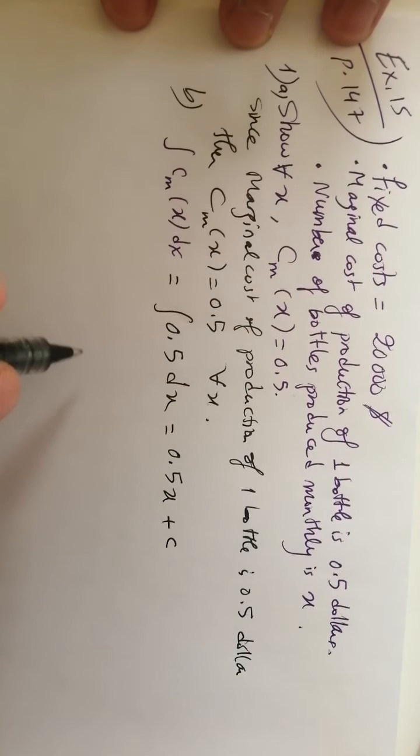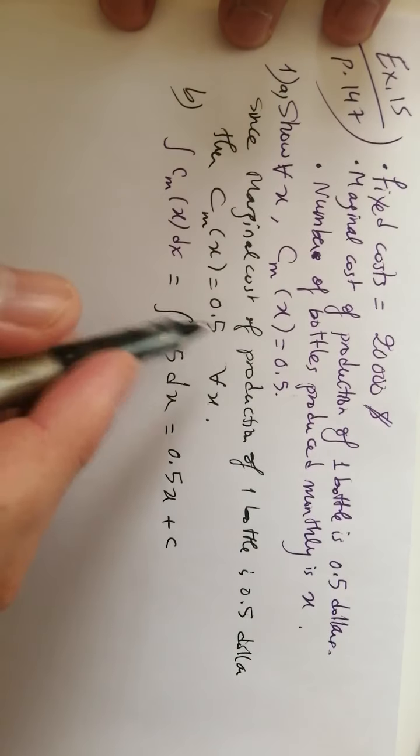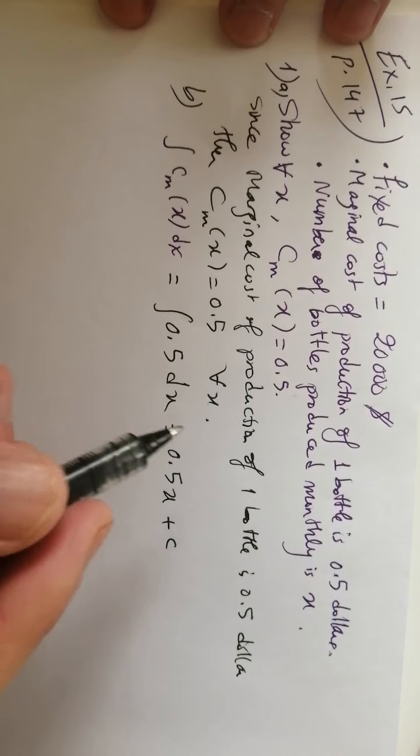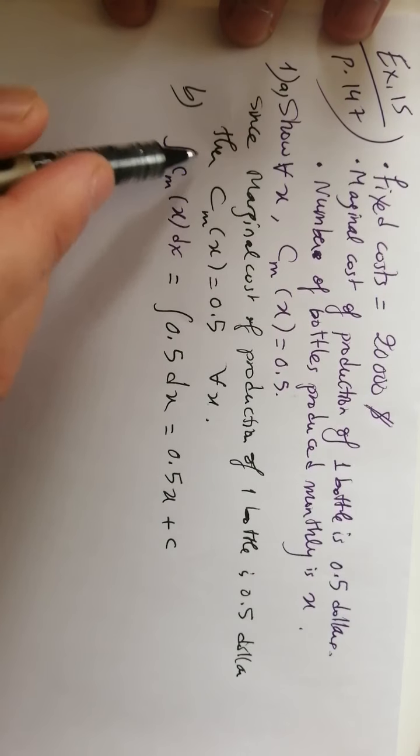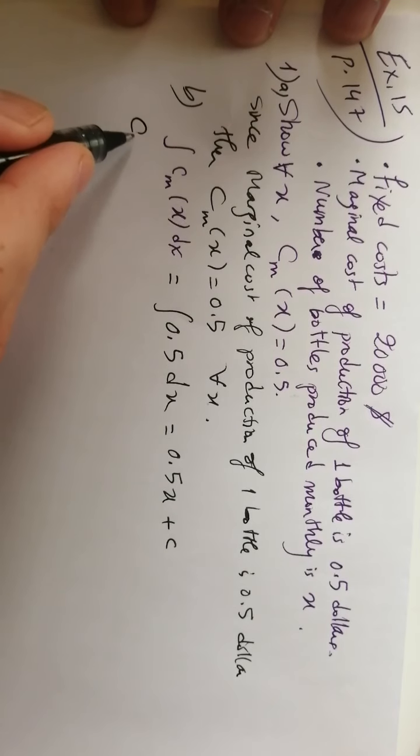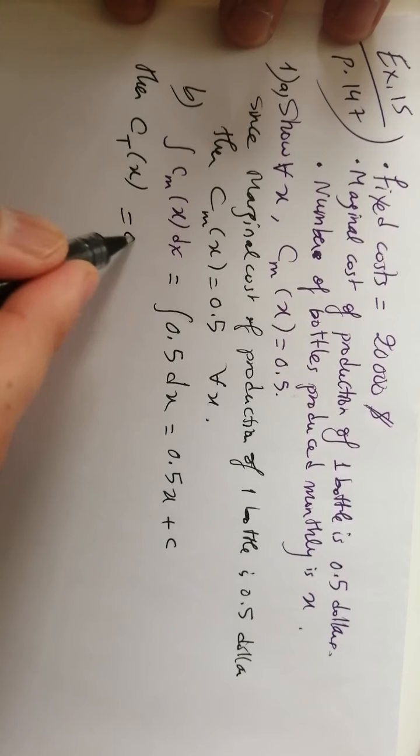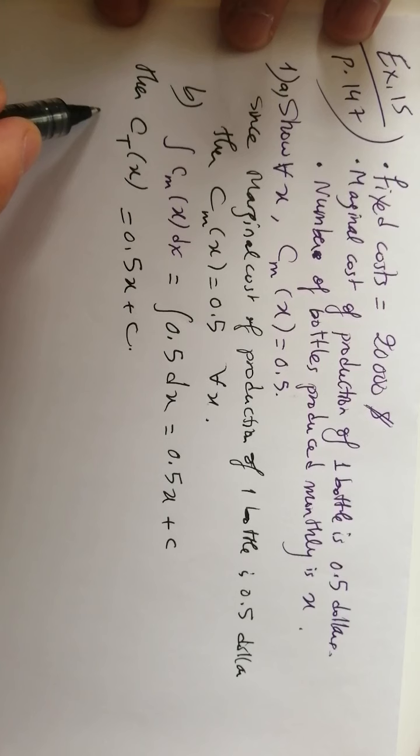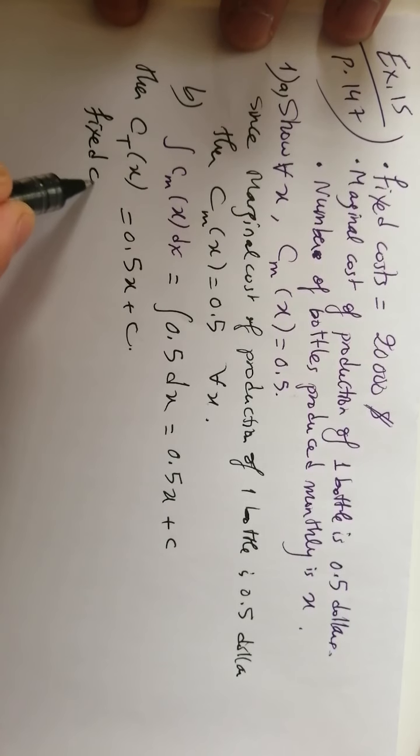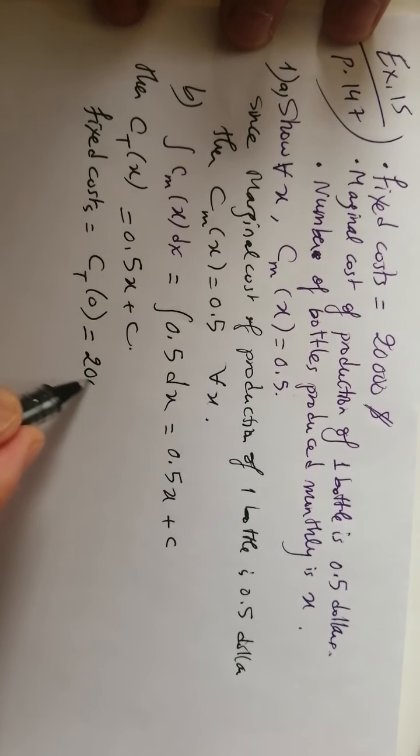Now deduce the monthly total cost. The fixed cost is given as $20,000. The integral of the marginal cost gives us the total cost, so CT of x equals 0.5x plus C. We know that the fixed cost equals CT of 0, which is $20,000.